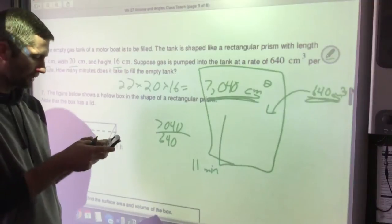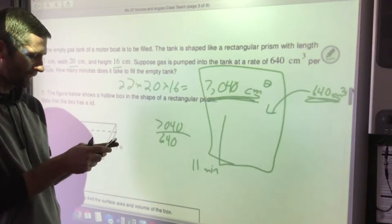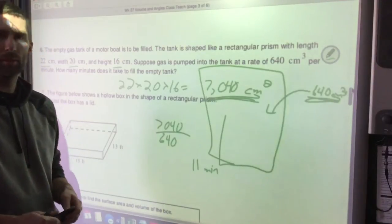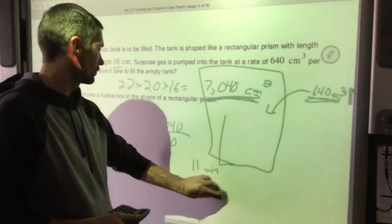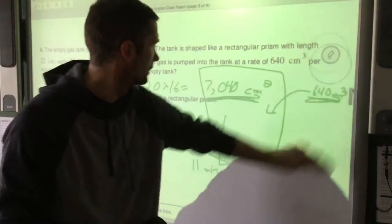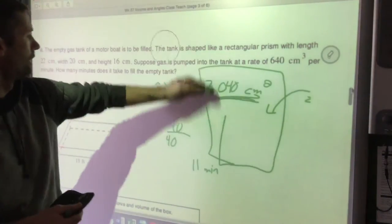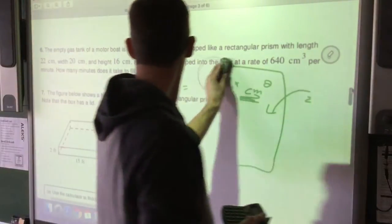Alright, if you would have multiplied, you would have gotten a big answer that would not have made sense. Make sure, four million something. Make sure your answers are always reasonable.